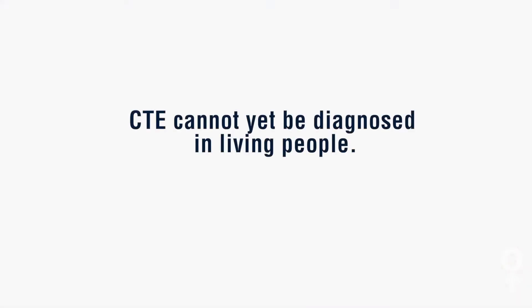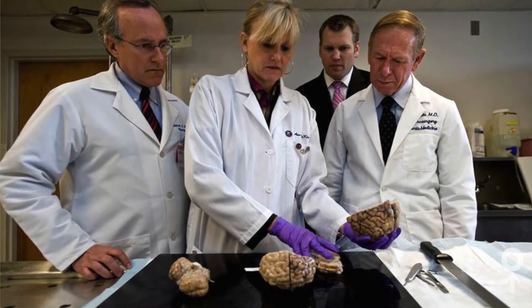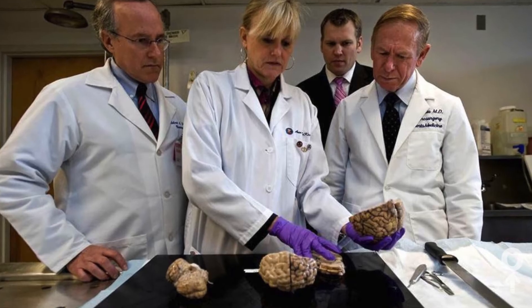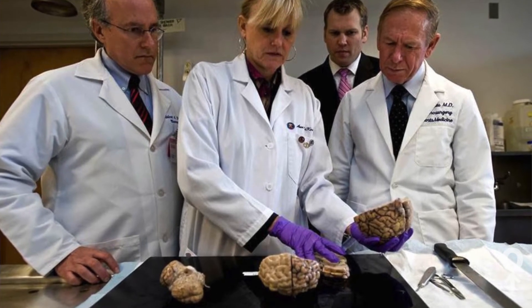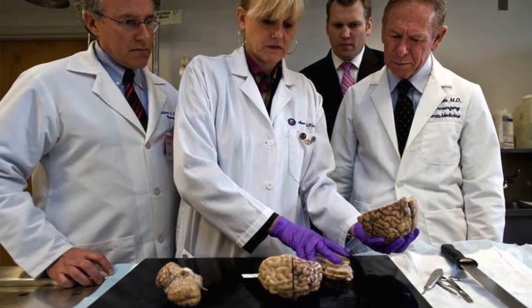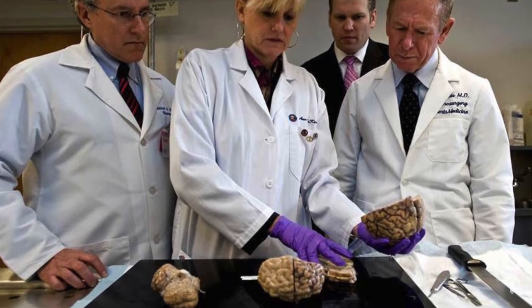CTE is defined neuropathologically. You can't even make the diagnosis without a neuropathological examination of the brain tissue. What we look for under the microscope is the deposition of an abnormal tau protein that clusters around blood vessels in the brain. That's a very distinct lesion — it's a specific lesion for CTE. There's no other disease that causes those changes in tau protein, and that's how we make the distinctive diagnosis.